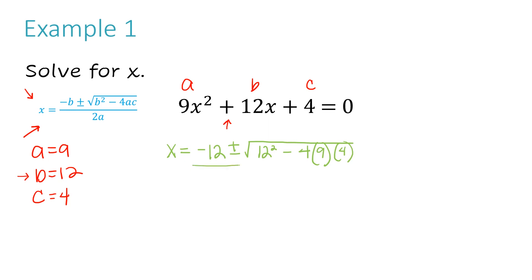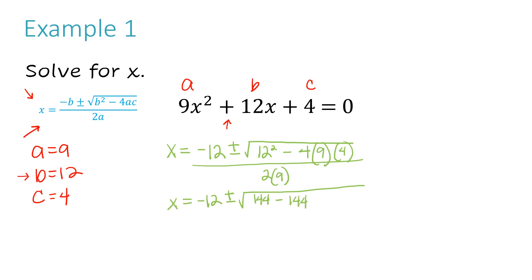Now all of this is over 2a, so 2 times a which is 9. Now I'm going to start by simplifying everything under my radical and multiplying my denominator. x equals negative 12 plus or minus the square root of 12 to the second power, which is 144, minus 4 times 9 times 4, which is also 144. Now I'm going to put all of that over 18 because 2 times 9 is 18. Under my radical, 144 minus 144 is 0, so that just drops off.